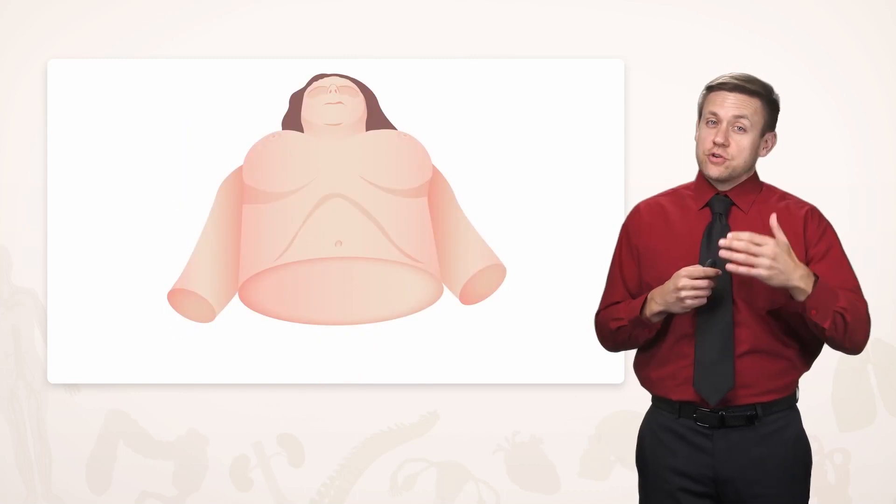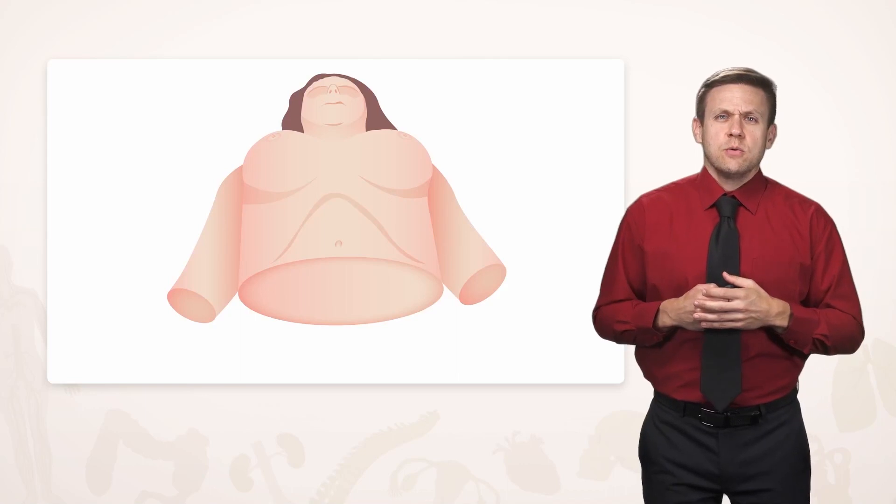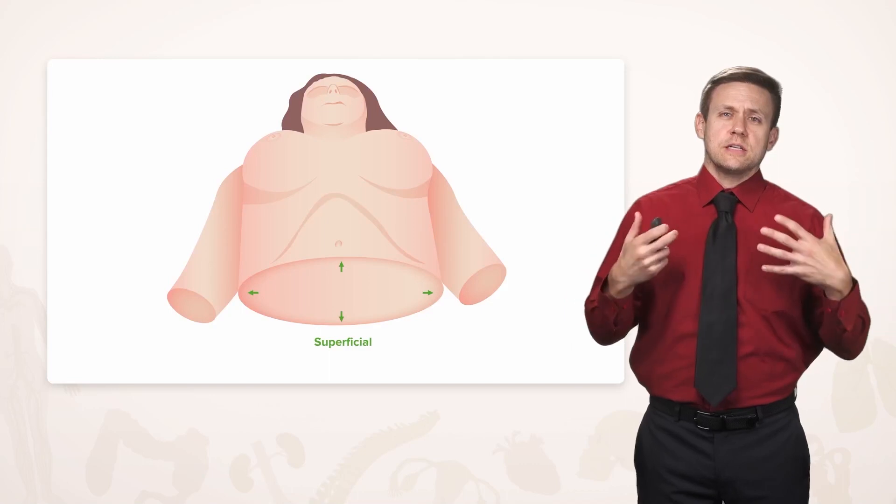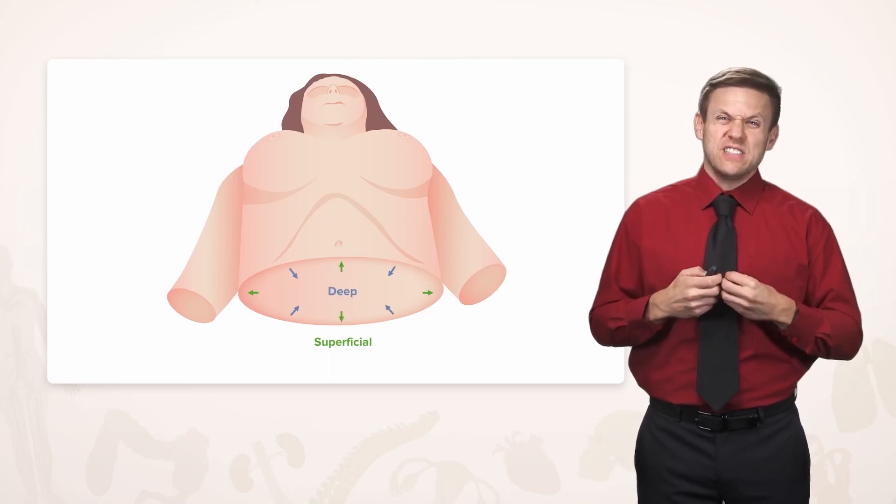And if we do a transverse view, here's a good example of a transverse view. When we talk about internal structures, we'll say something's more superficial if it's closer to the skin, and we'll say deep if it's closer to the center of the body.